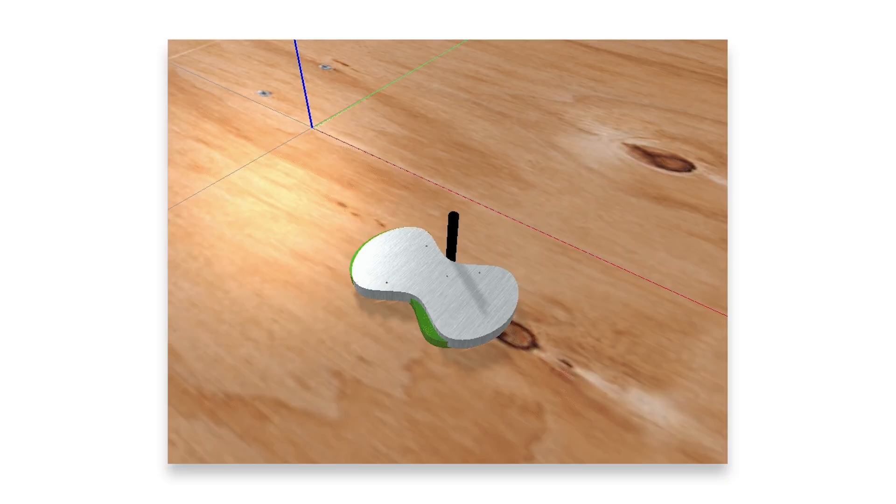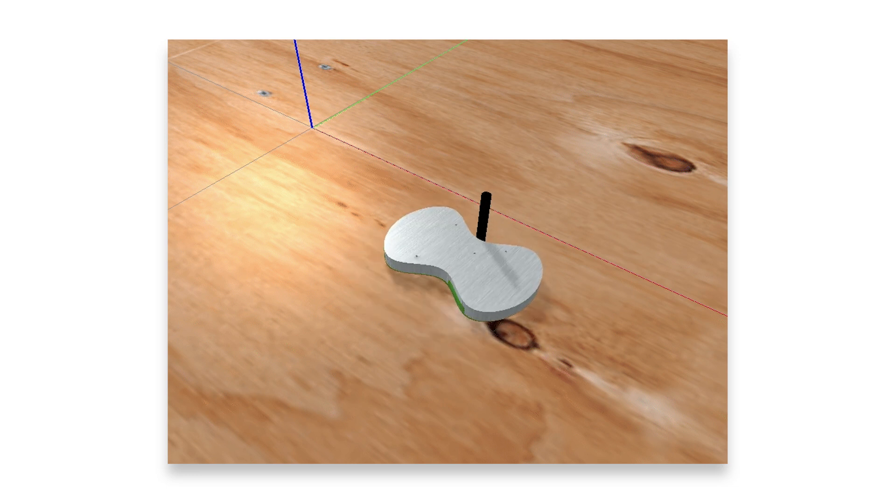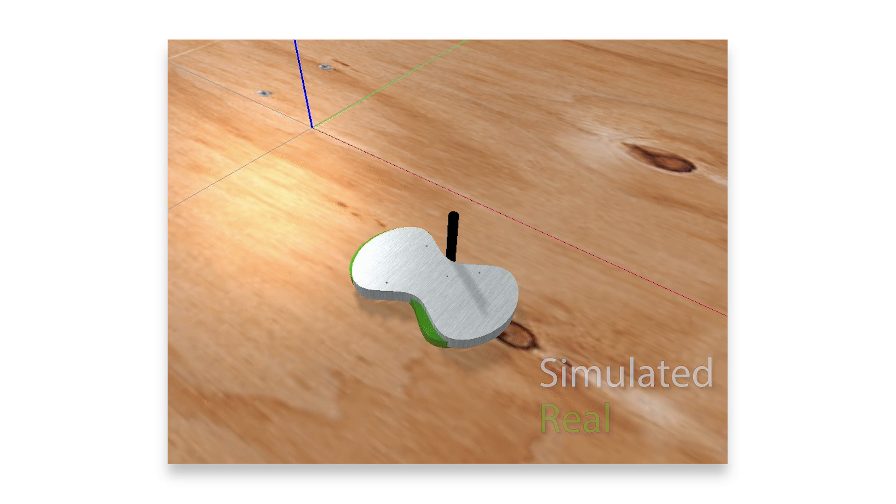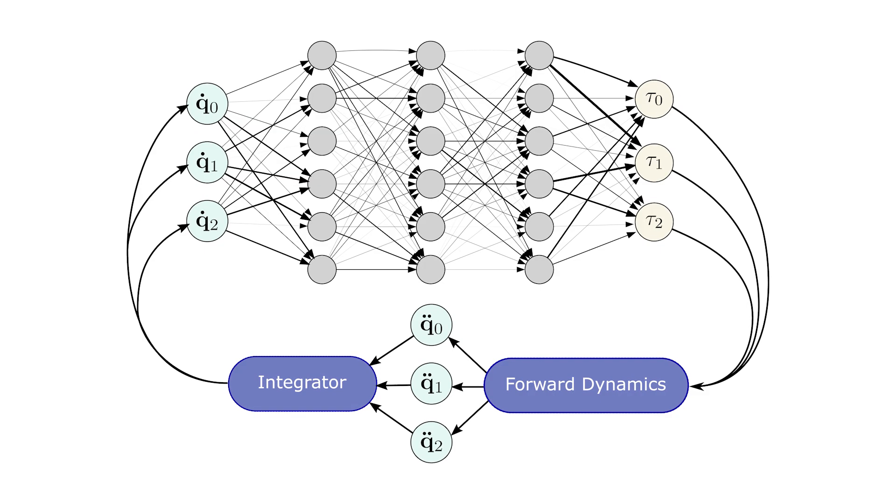Rigid-body dynamics is a well-modeled phenomenon, but many real-world systems do not perfectly adhere to its laws. Effects such as stiction, motion in viscous media, and contact phenomena can cause simulators to diverge significantly from reality, an effect known as the sim-to-real gap.